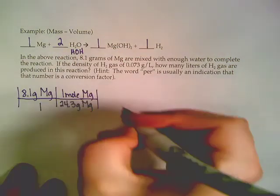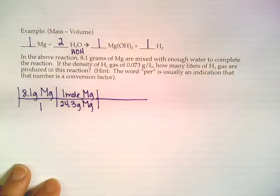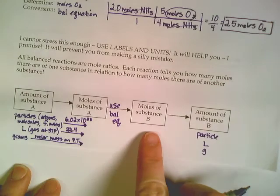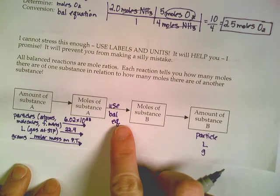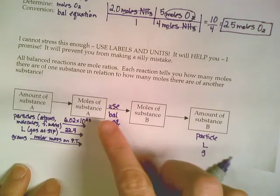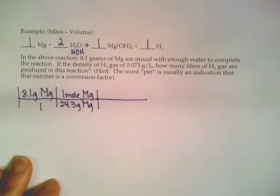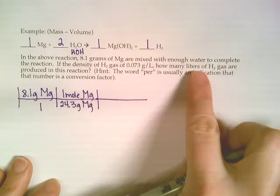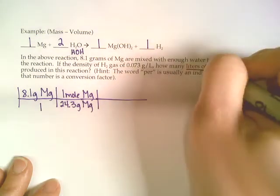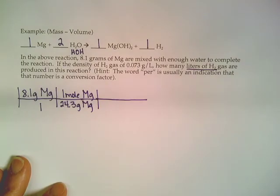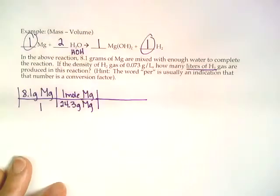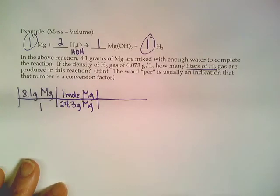The next step in our four-step flow chart says once you're at moles of one chemical, we need to get to moles of the other chemical using our balanced equation to get us there. So if we're at magnesium right now and we're eventually trying to get to liters of hydrogen gas, we need the mole-to-mole ratio from our balanced equation between magnesium and hydrogen. Well, it happens to be a one-to-one ratio.